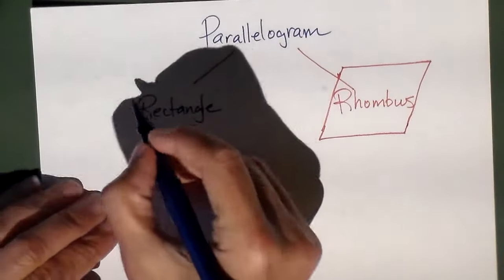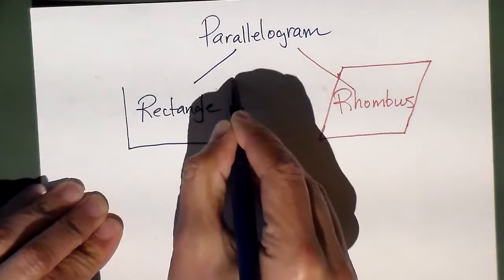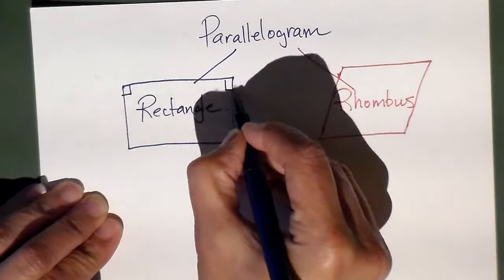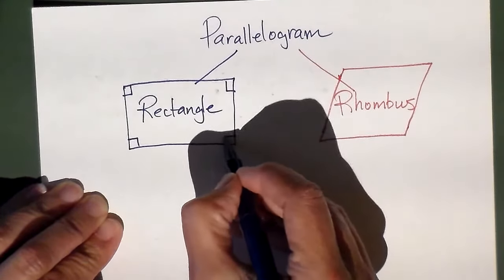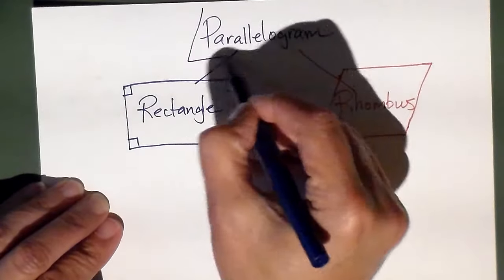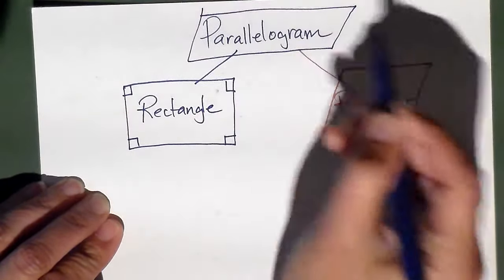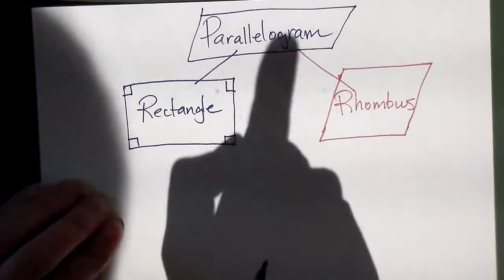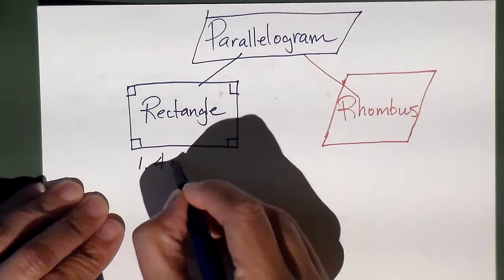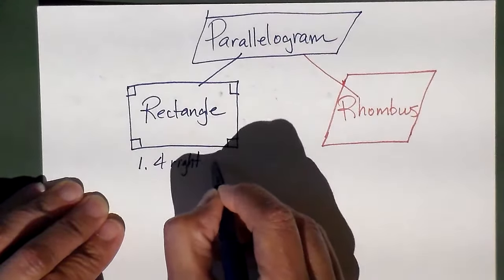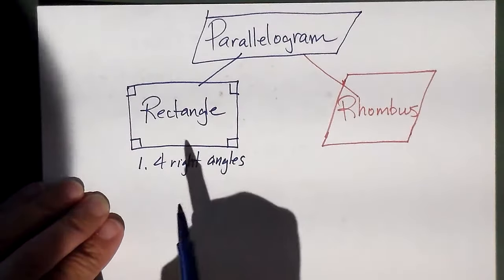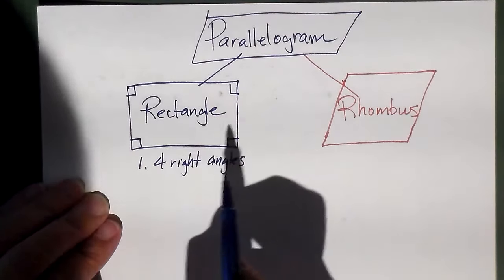These are your special characteristics. Rectangles have all the characteristics of the parallelogram except they add a couple of special ones. Number one: four right angles. In a rectangle, a rectangle is a parallelogram with four right angles.